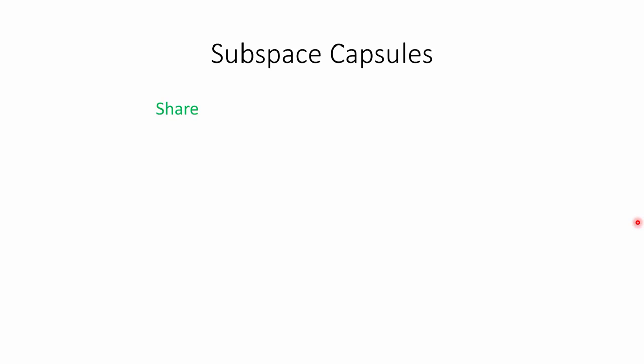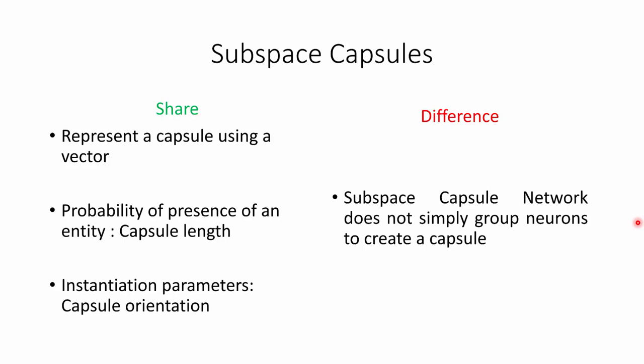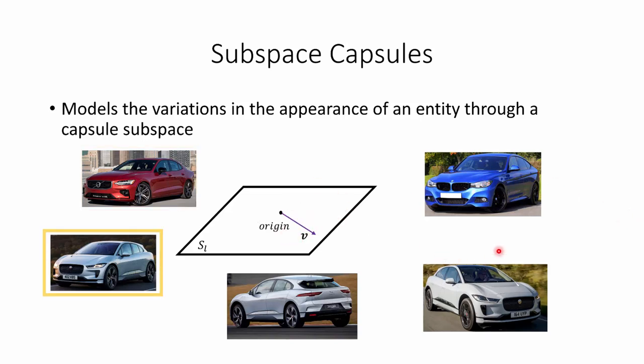Now we want to introduce subspace capsules. In subspace capsules, we share the idea of representing a capsule using a vector. We also follow the principle of a capsule network, using the capsule length to show the score of presence of an object, and encoding its properties in capsule orientation. But what is different here is that we do not simply group neurons to create a capsule. In subspace capsules, we model the variation in the appearance of an entity using a capsule subspace, and each sample can be represented using a vector in this subspace.